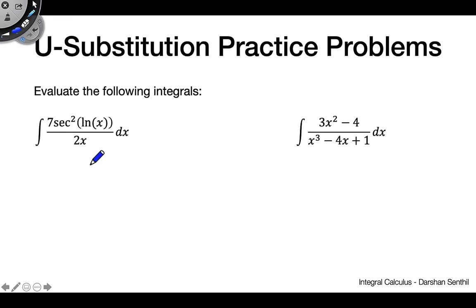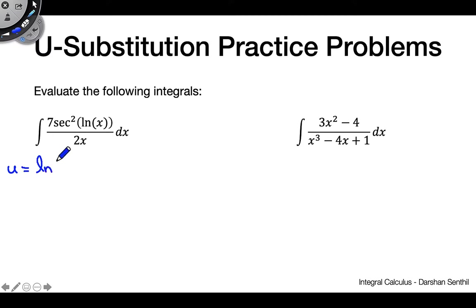Now let's move into slightly more complex examples. For this one, the right substitution is u equals ln of x. You could follow the innermost function rule, but let's see exactly why this substitution works so well. Taking du, we get 1 over x dx, so solving for dx gives us x du.